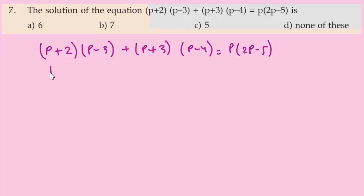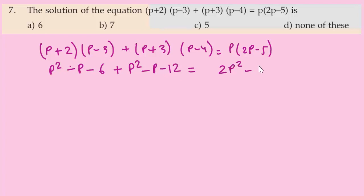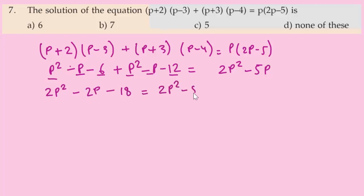Expanding: P²- P - 6 plus P² - P - 12 equals 2P² - 5P. Combining: 2P² - 2P - 18 equals 2P² - 5P.